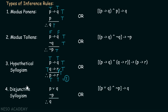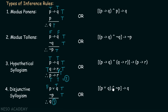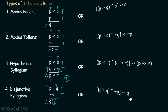The fourth rule is disjunctive syllogism: p or q, not p, therefore q. Let's say p or q is true and not p is also true. If not p is true, then p becomes false. And if p is false, then q has to be true. Therefore, the conclusion becomes true, and we can write this argument as: p or q, and not p, implies q.